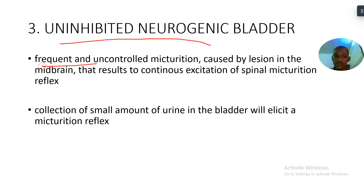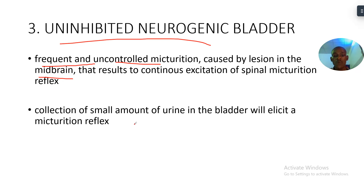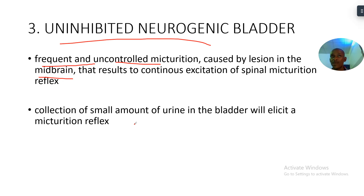The uninhibited neurogenic bladder involves frequent and uncontrolled micturition caused by a lesion in the midbrain. This results in continuous excitation of the spinal micturition reflex. A collection of small amounts of urine will elicit a micturition reflex. The key difference from the automatic bladder is that in the uninhibited neurogenic bladder there is a micturition reflex — the patient actually feels the urge — but the urine is only in small quantity, not the required amount for normal micturition.